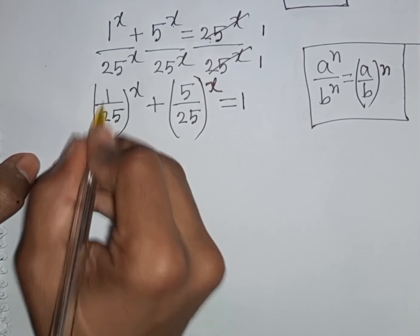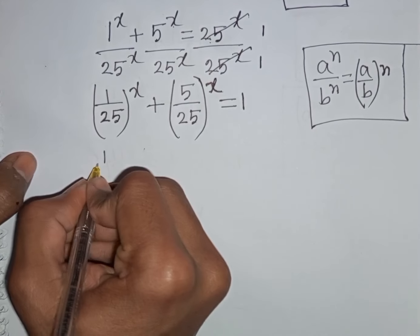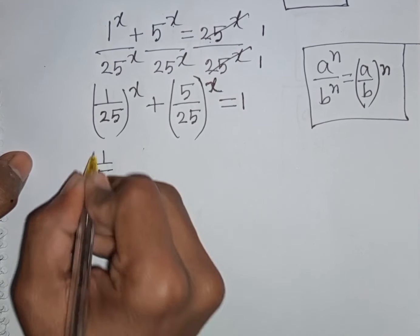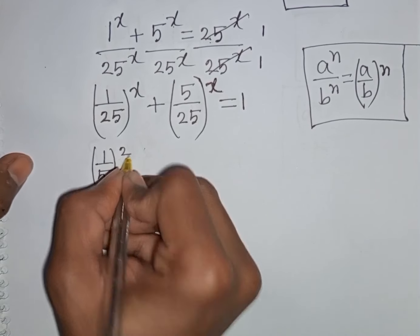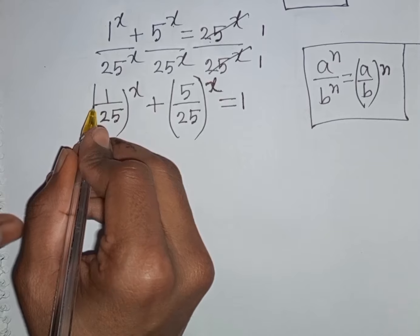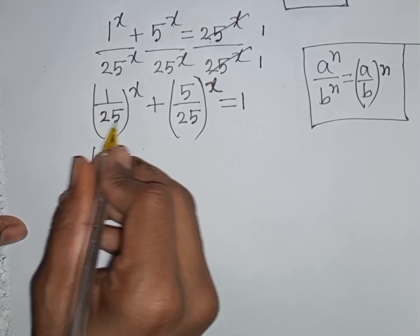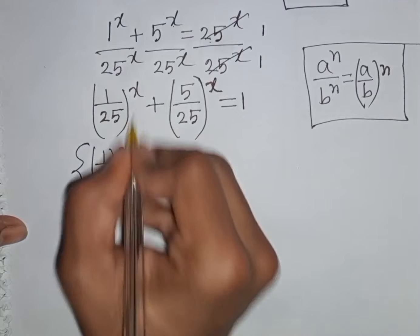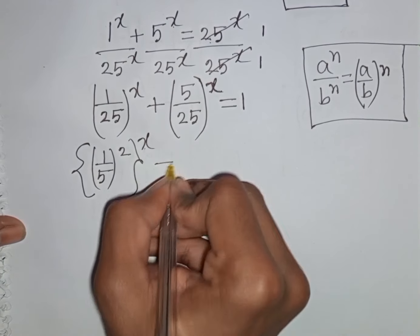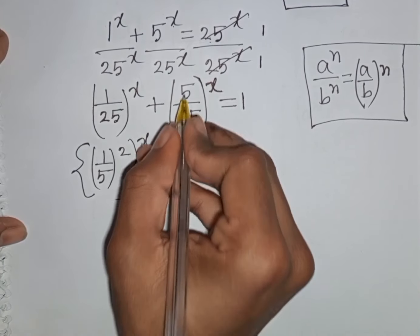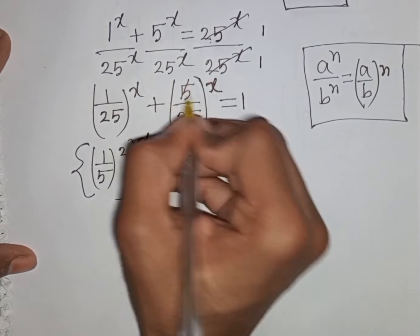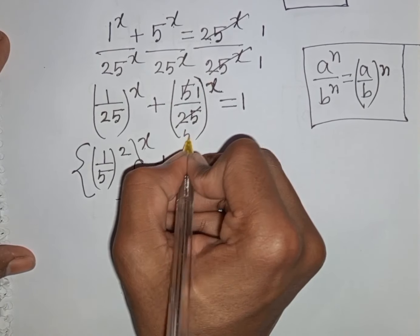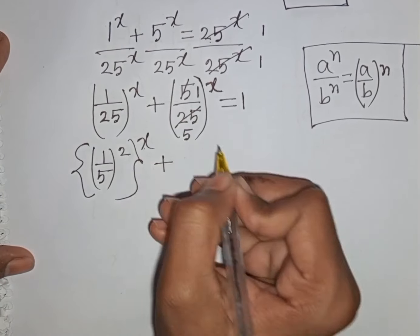Now 1/25 can be written as (1/5)^2, since 1 squared is 1 and 5 squared is 25. Then 5/25 simplifies to 1/5, and 25/5 equals 5.